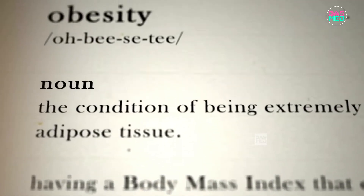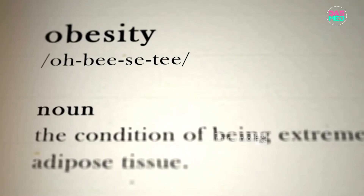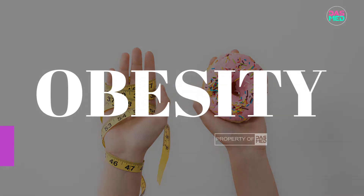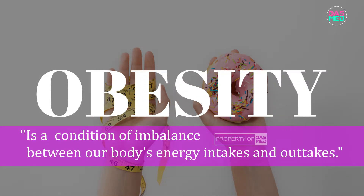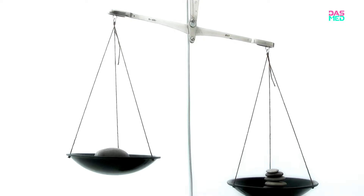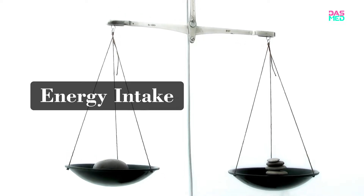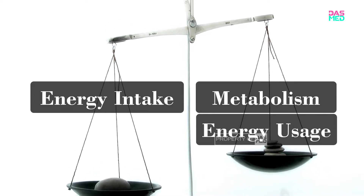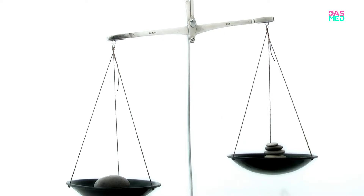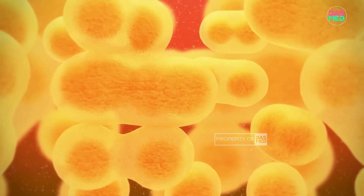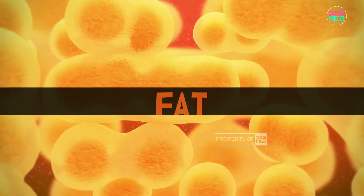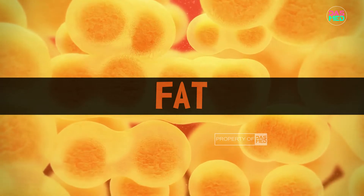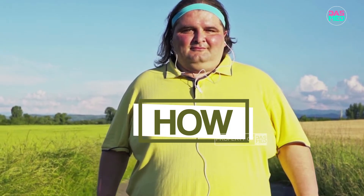Everyone here must have known about the definition of obesity. Obesity is a condition of imbalance between our body's energy intake and outtake. Obesity occurs when a huge amount of energy intake is not balanced with the body's metabolism and energy usage. Consequently, the energy will be stored in the form of fat and is going to affect weight gain. So, how can a person seem to be obese?